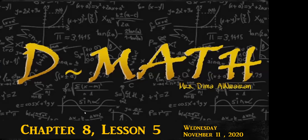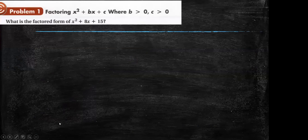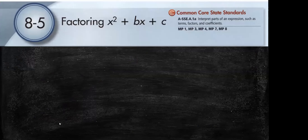Our lesson today is chapter 8, lesson 5, which is talking about factoring x squared plus bx plus c. In the previous lessons, we talked about how we can multiply binomial with binomial, monomial with binomial, multiplying monomial with trinomial, trinomial with binomial, and so on. All of these ways we call them multiplying.